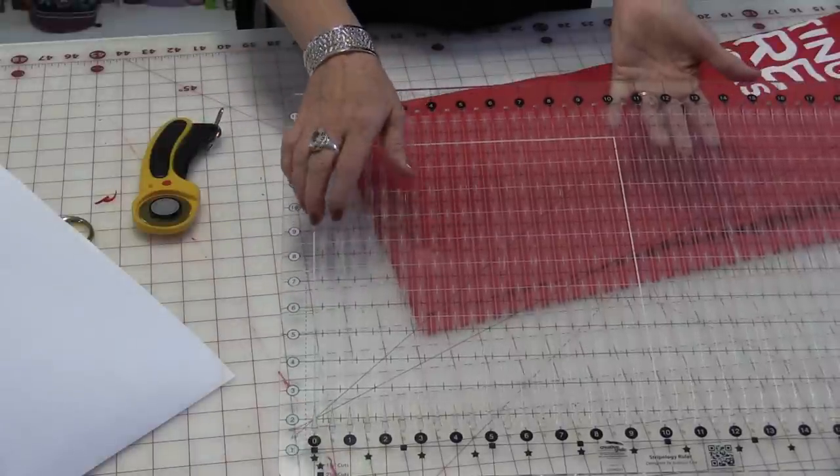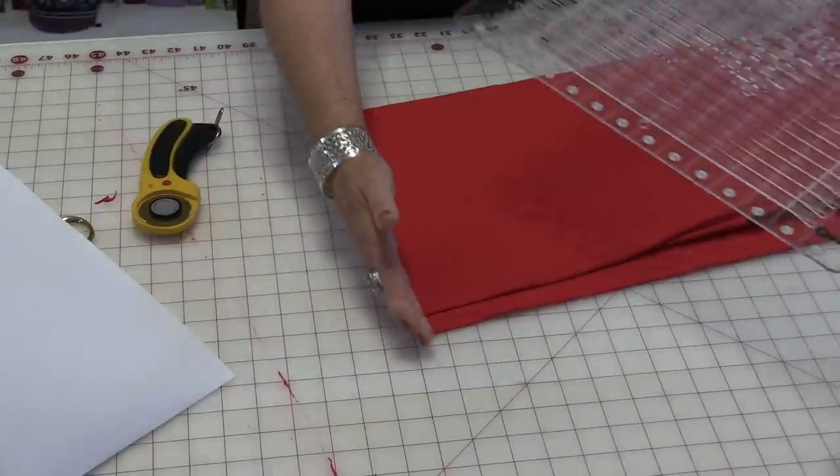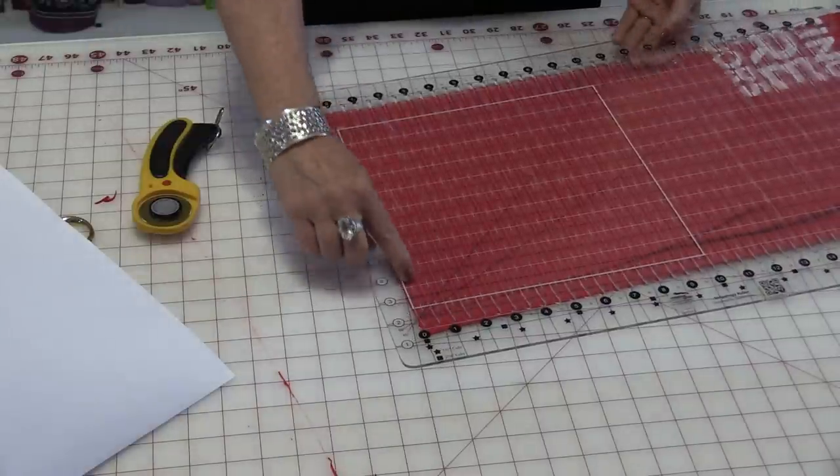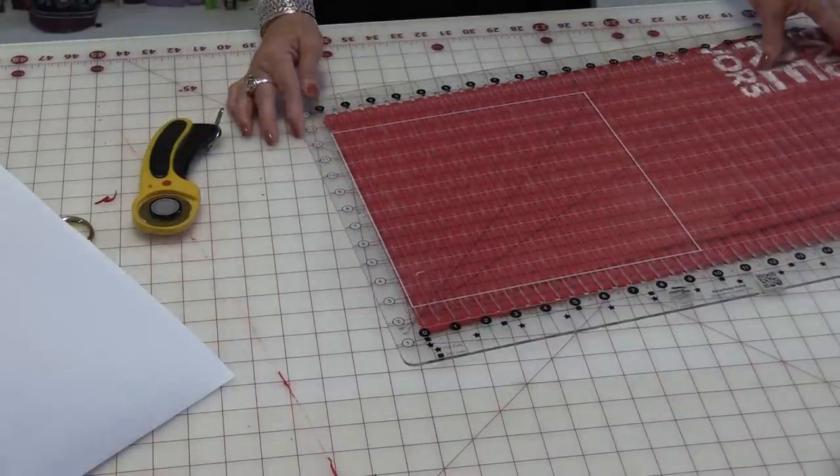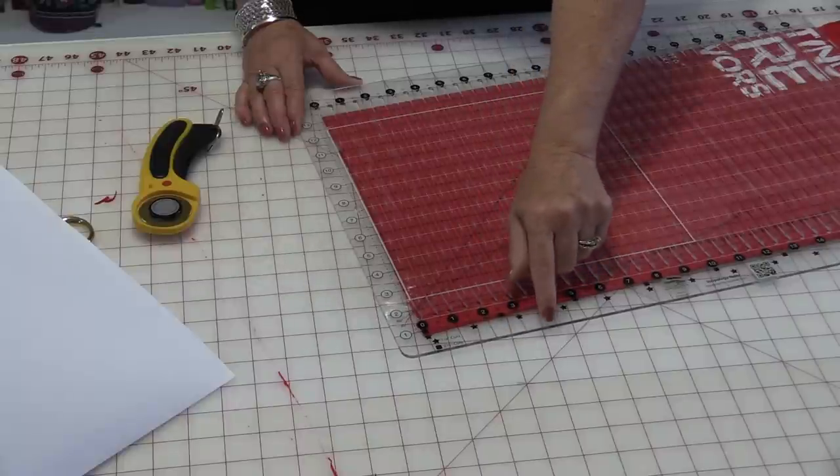And this is a great ruler to use because you can follow the one-inch marks. So the first thing you're going to do is straighten up your edge and put your first line along that one mark. Pull your ruler down so that you're not able to come off and cut that edge off.